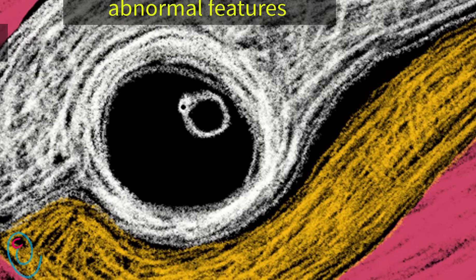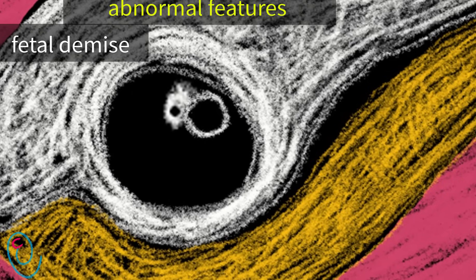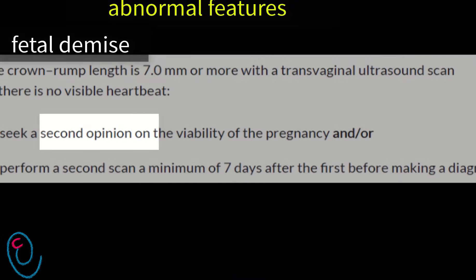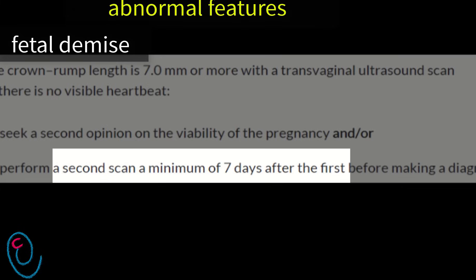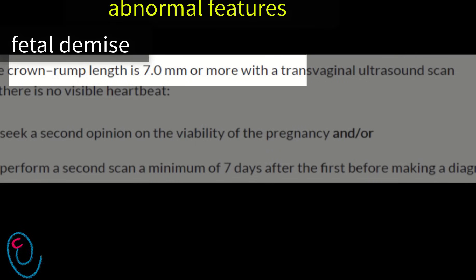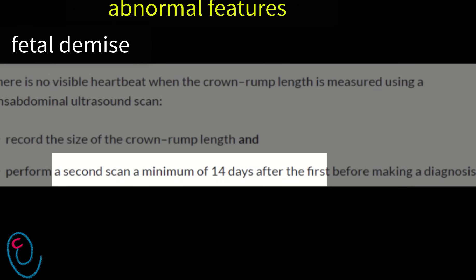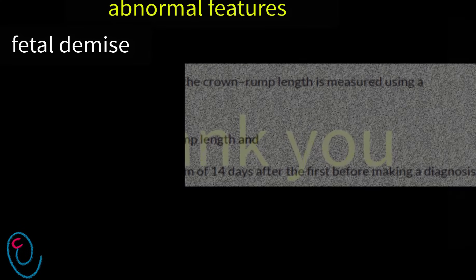Fetal demise is an abnormal feature. It is diagnosed when the fetal pole is more than 7 mm with no fetal heartbeats on transvaginal ultrasound, or after 14 days if the fetal pole is more than 7 mm with no fetal heartbeats on transvaginal ultrasound, or after 14 days if transabdominal ultrasound is used.